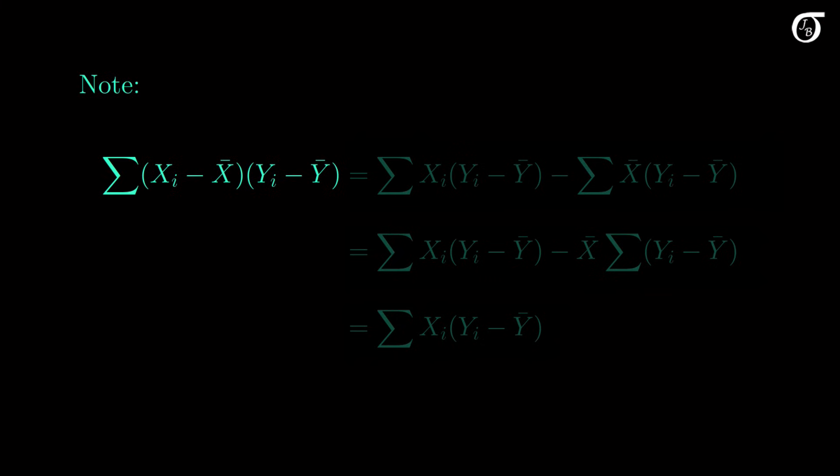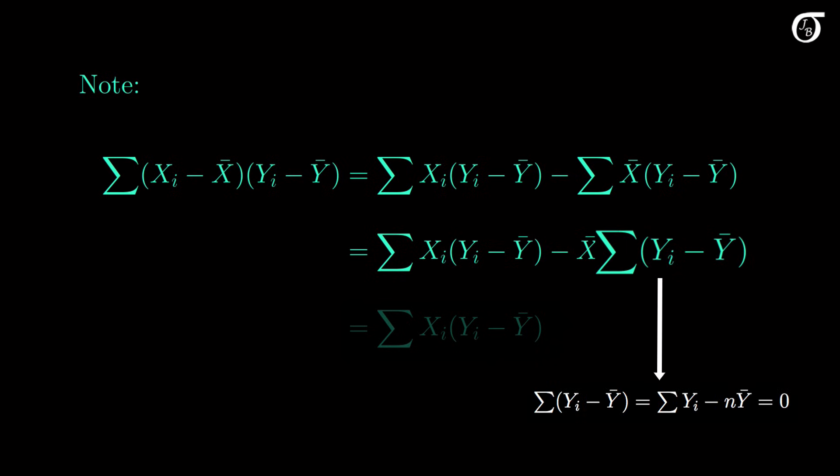Looking at this form of the sum of products, we can multiply through by the second term, splitting up the first term. Now since X bar is a constant with respect to the summation, it can come outside the summation. And the sum of these deviations for any variable is always 0. I'll let you verify that final bit for yourself. But the second term becomes 0, and we're left with the sum of products equaling the sum of x sub i times y sub i minus y bar.